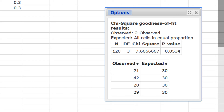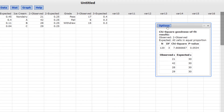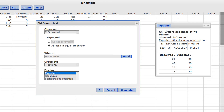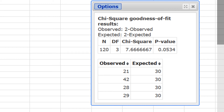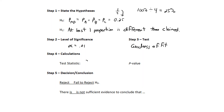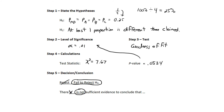The chi-square test statistic is 7.67 and the p-value is 0.0534. We could also use the 25% column and get the same result. The p-value 0.0534 is greater than the level of significance 0.01, so we fail to reject the null hypothesis. There is not sufficient evidence to conclude that at least one proportion is different than claimed — we were not able to prove that at least one was different.